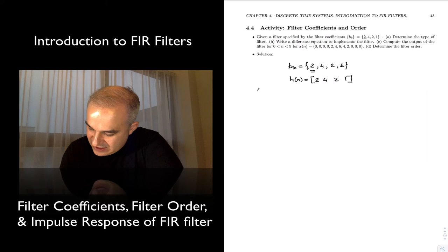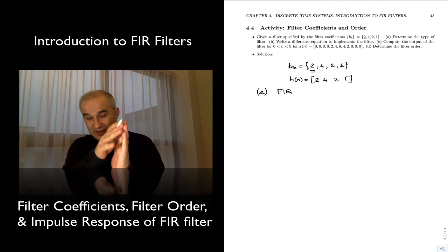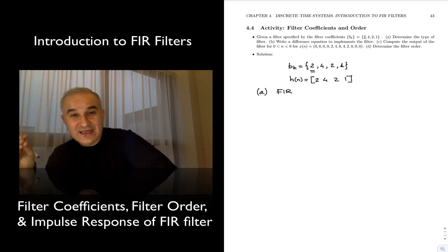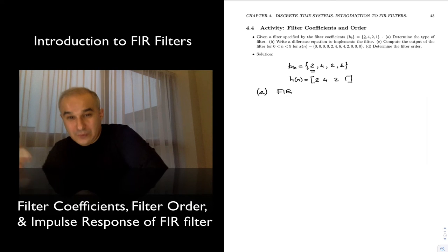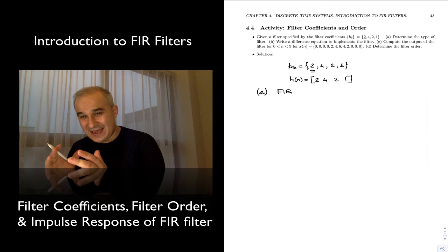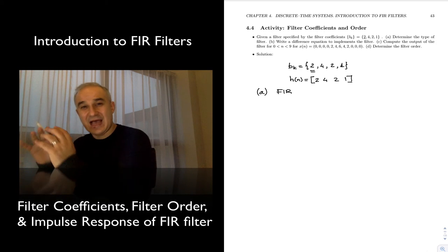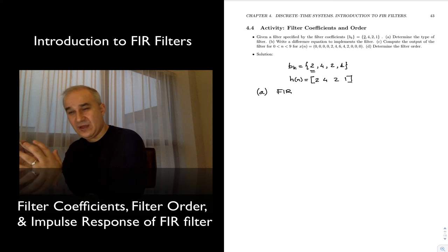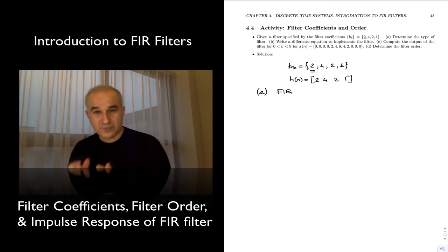Part A: determine the type of filter. This is clearly an FIR filter — finite impulse response. Notice the response does not go all the way to infinity. In the case of FIR filters, the filter coefficients, the B coefficients, are the impulse response of the system. The impulse response completely characterizes the system. Let's break that down: 'response' means output — the output of the system when the input is an impulse function. And because it's finite, we call these finite impulse response filters.